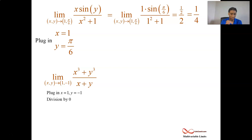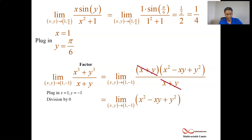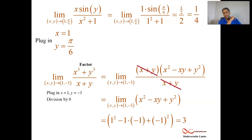If I try to plug in (1, -1), I'm going to be blocked because the denominator is going to equal zero — can't have division by zero. So we're going to factor the numerator. The denominator is nothing to factor, but the numerator is the sum of cubes. There's a formula for that: it's the sum of the guys being cubed, and then there's a quadratic made from that as well. That allows us to cancel, and now we no longer have division by zero. We plug in x equals 1 and y equals negative 1 and end up with 3.